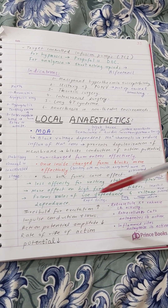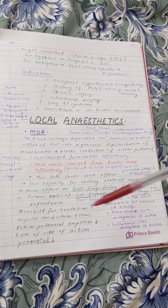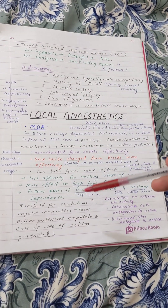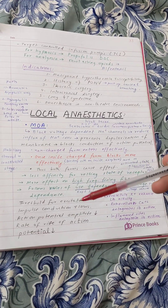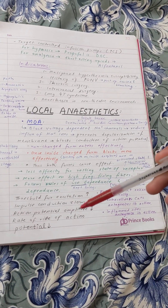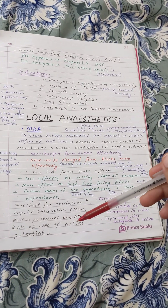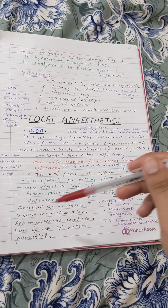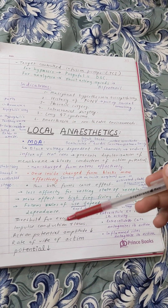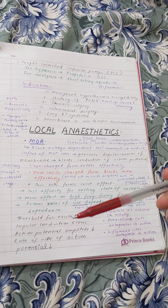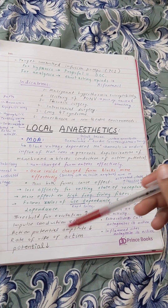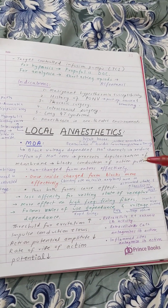Local anesthetics produce four important effects: they increase the threshold for excitation, slow down impulse conduction, decrease the amplitude of the action potential, and decrease the rate of rise of the action potential. These four effects summarize the use-dependent and voltage-dependent mode of action.